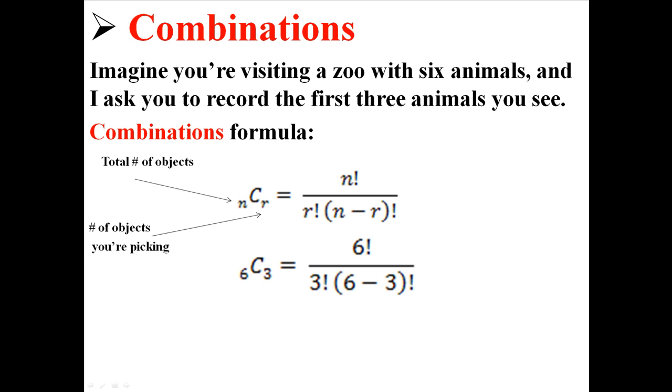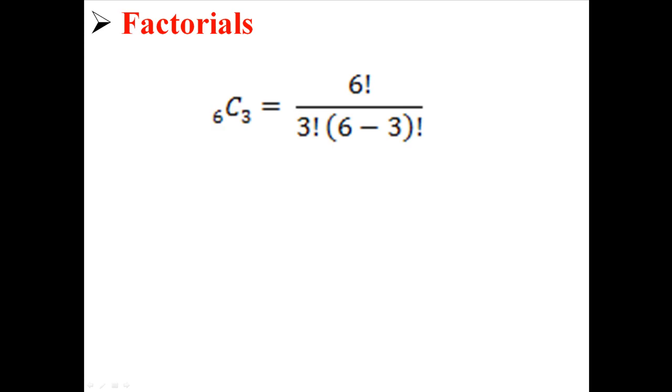So in the equation, whenever there's an N, I put six. And whenever there's an R, I put three. Now you see these exclamation marks next to the numbers, and that might be a little bit confusing, but let me show you.